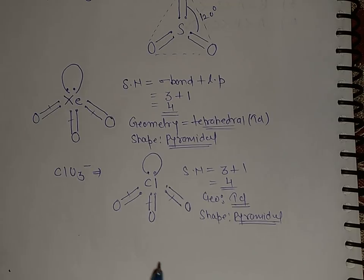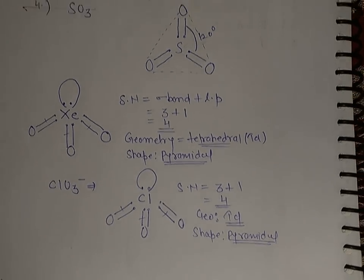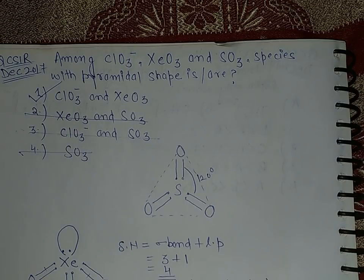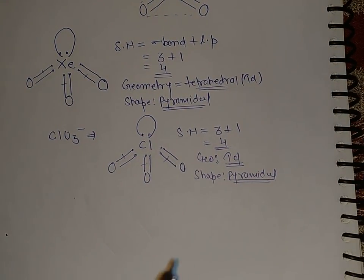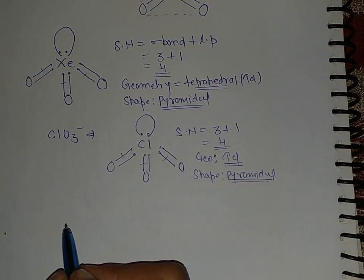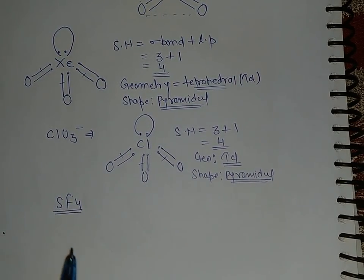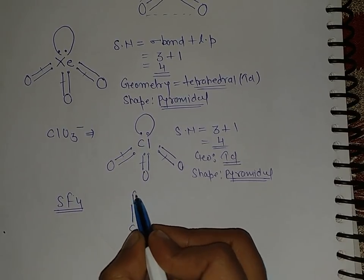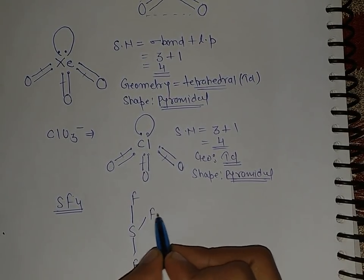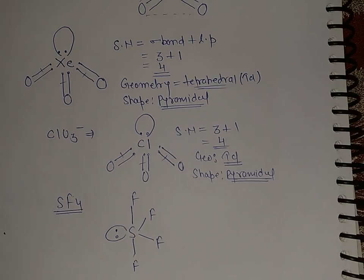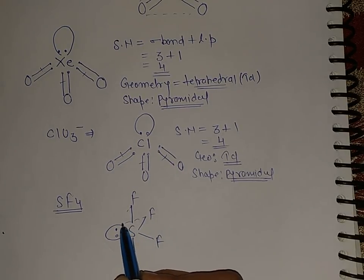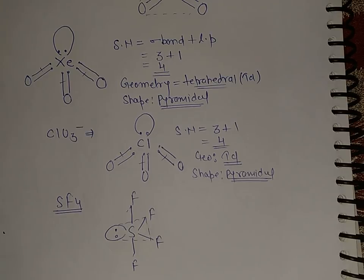So the first option is the correct answer — both XeO3 and ClO3⁻ have trigonal pyramidal shapes. To give you an idea about the geometry versus shape concept, let's take SF4. Sulfur is the central atom with four fluorines and one lone pair. The geometry is trigonal bipyramidal (TBP).